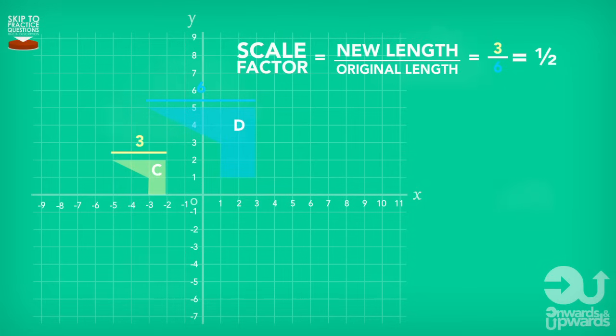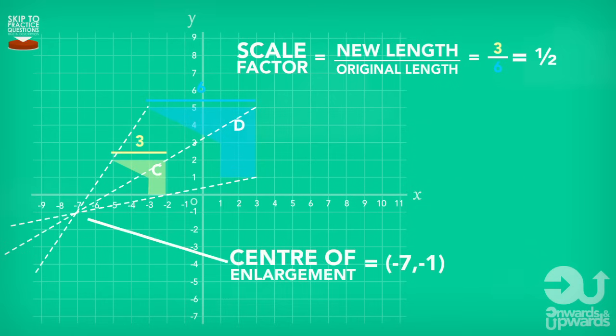For the centre of enlargement, like previously, we draw lines that align corresponding corners. Once we draw these in, the point they cross over and intersect at is the centre of enlargement.